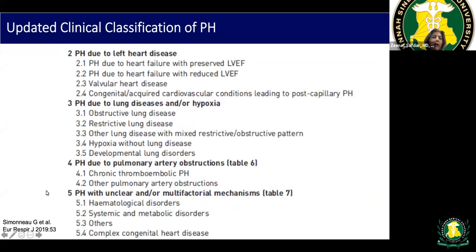Group two PH is caused by left heart disease, including preserved or reduced LV ejection fraction, or valvular disease such as mitral stenosis, aortic stenosis, or aortic regurgitation. Group three is lung disease or hypoxemia, including obstructive lung disease, restrictive ILDs, IPF, mixed obstructive-restrictive disease, and hypoxemia, which is a key trigger for pulmonary vasoconstriction.